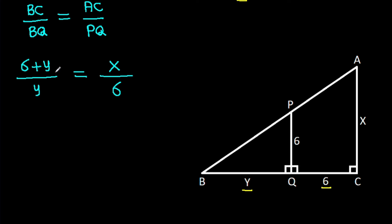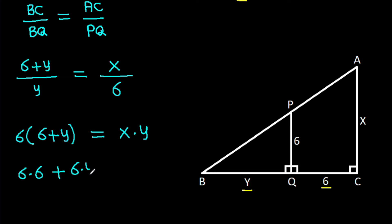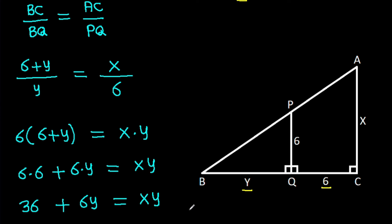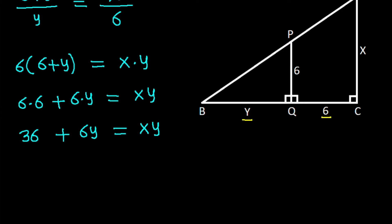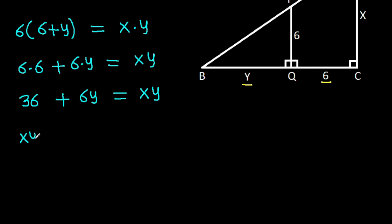Cross-multiplying, 6 times (6 minus Y) equals X times Y. So 36 minus 6Y equals XY. Therefore XY equals 36 minus 6Y. Suppose this is equation 2.